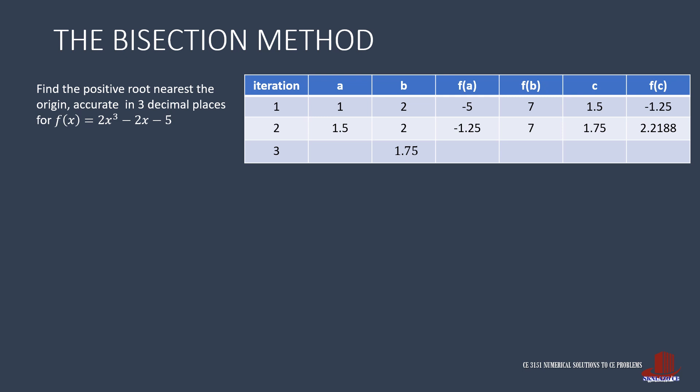Now let's continue the iteration without the graph. As earlier discussed, B is replaced with 1.75 and its corresponding F of B is 2.2188. A remains at 1.5 and F of A is negative 1.25. Compute for C by taking the average of A and B to have 1.625. Then use this value in the equation to come up with F of C as twice of 1.625 cubed minus twice of 1.625 minus 5, resulting to 0.332. With a positive sign of F of C, we have to replace B with 1.625.